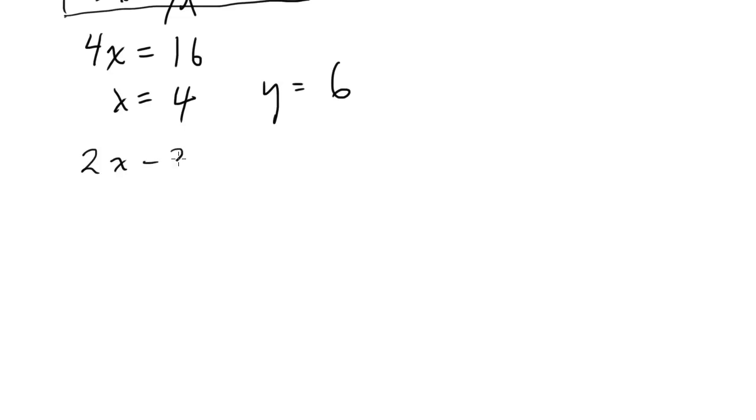How about 2x minus 2y equals 4 and 3x plus y equals 10? So notice here I don't have something I can immediately cancel because 3x and 2x gives me 5x, minus 2y and y gives me minus y. But if I go ahead and multiply the bottom equation by 2, watch what happens.